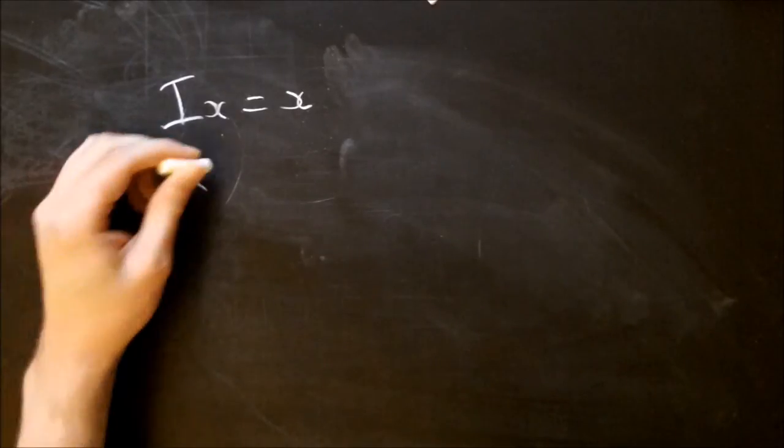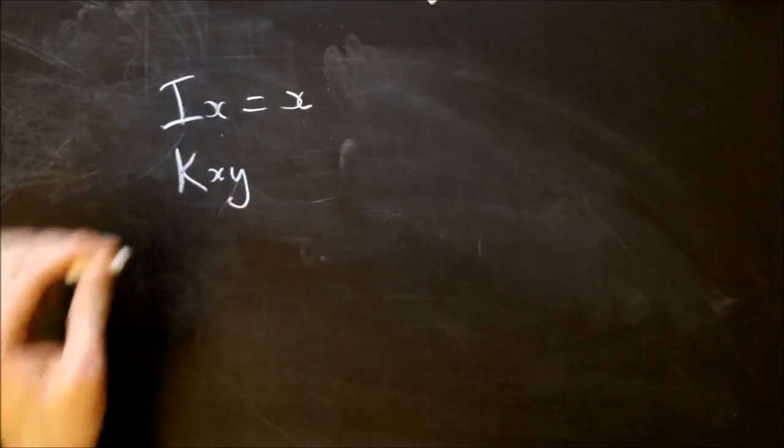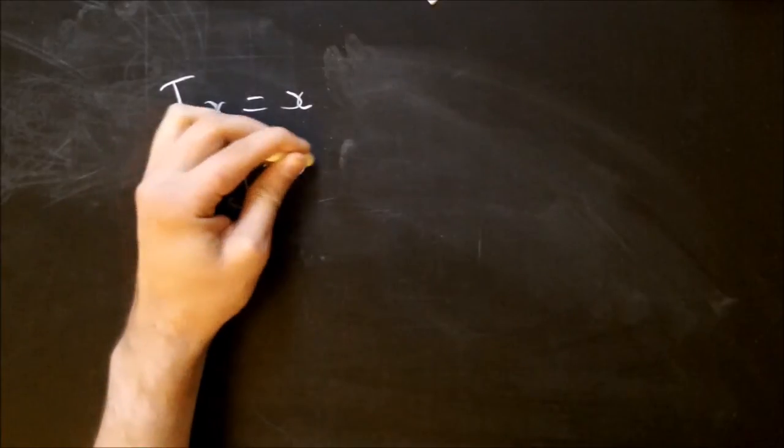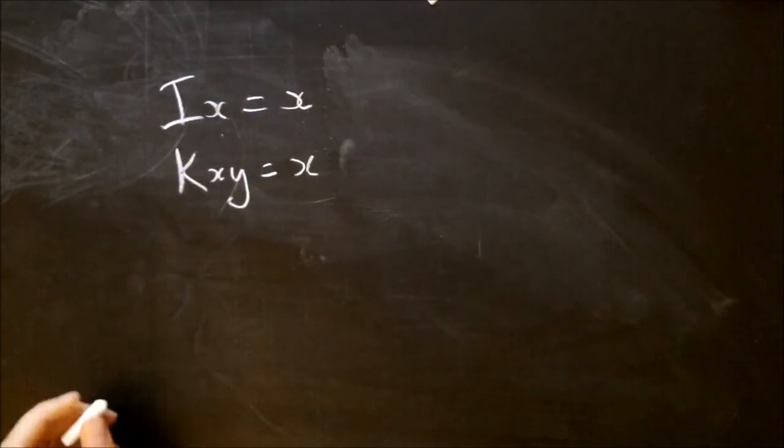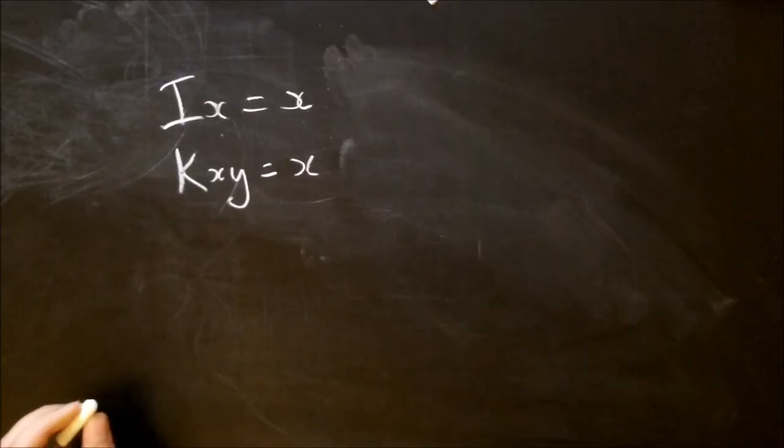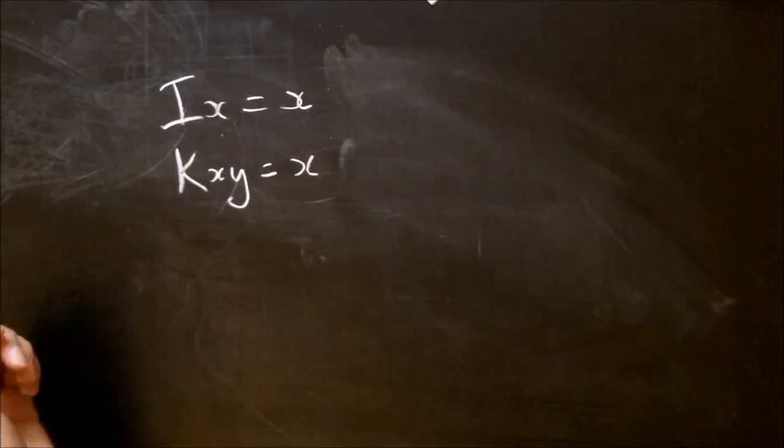k works on two things, and it gives you the first one. Just throwing the second one away. So simple so far.